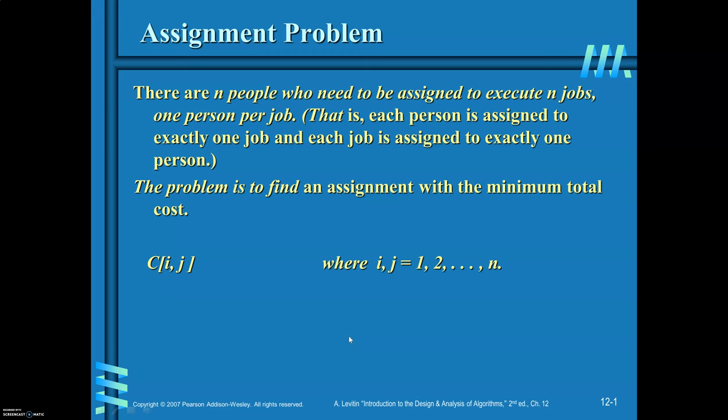In this video, I will discuss how the assignment problem can be solved using the branch and bound design technique. There are N people who need to be assigned to execute N jobs, one person per job. Each person is assigned to exactly one job and each job is assigned to exactly one person. The problem is to find an assignment with the minimum total cost.